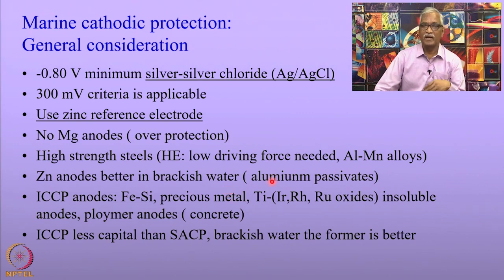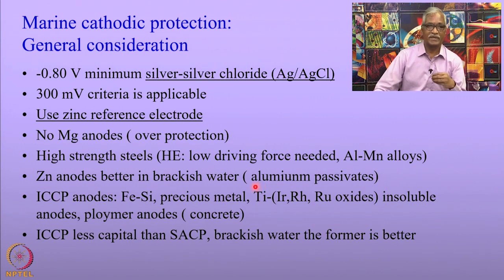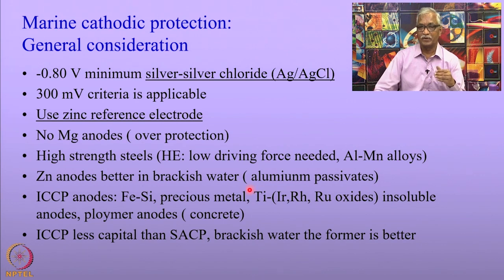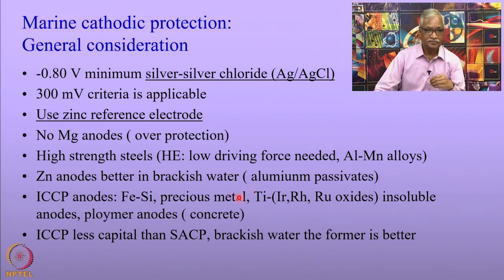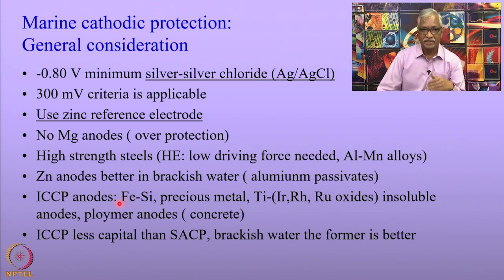Zinc anodes are better in brackish water as aluminum passivates. For aluminum to act as a sacrificial anode, the presence of chlorides is necessary — when chloride levels are low, aluminum anodes passivate. For marine structures, both ICCP and sacrificial anode systems are used.